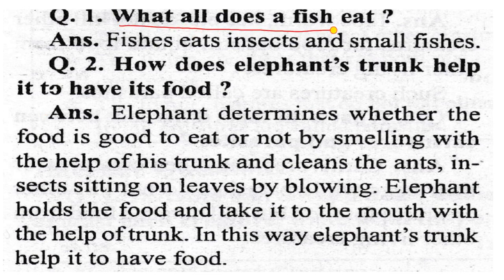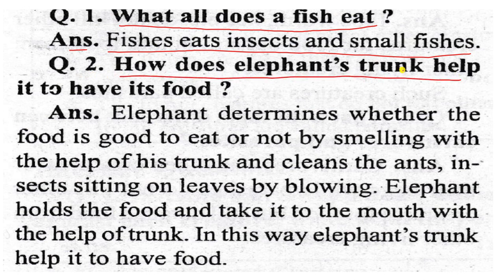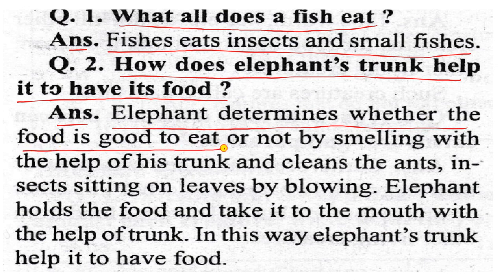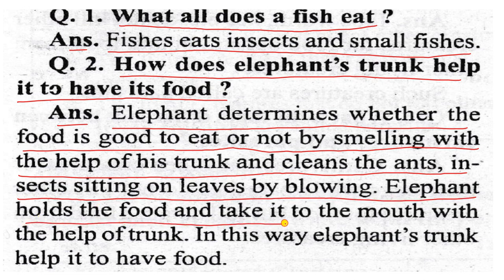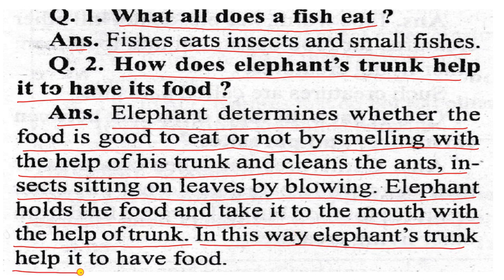What does our fish eat? Fish eat insects and small fishes. How does the elephant's trunk help it have food? The elephant determines whether the food is good to eat or not by smelling with the help of its trunk, and cleans ants sitting on leaves by blowing. It holds the food and takes it to the mouth with its trunk.